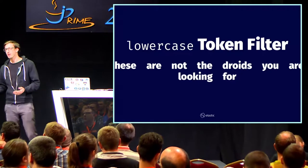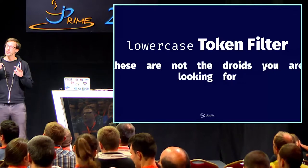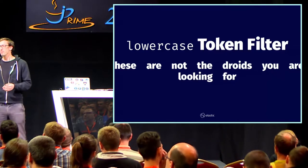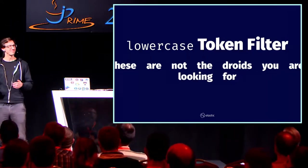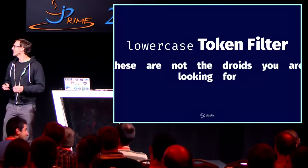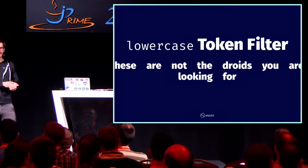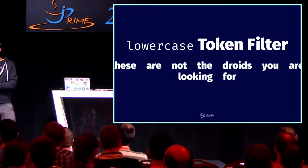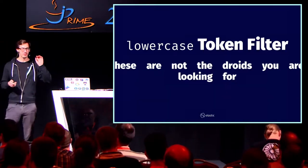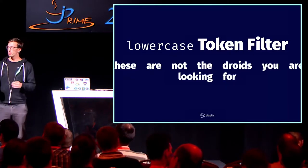Then we lowercase everything, because if you search in Google, you normally don't care about upper and lowercase. If you really care about upper and lower casing, you can skip that step and keep it. But if you normally don't care, there are different ASCII characters, so you just lowercase everything and then you just need to match on the lowercase characters. We have tokenized, we have everything lowercase. You can see the dot at the end is also gone — the punctuation mark was already removed in the tokenization.